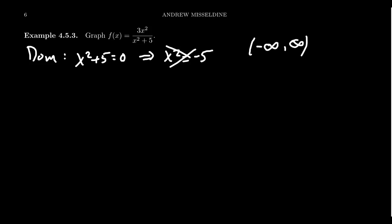Now, if we jump to discontinuities, for a rational function, the only way you'll have a discontinuity is if your denominator goes to 0. So since this denominator never goes to 0, this function has no discontinuities. That is to say, it's always continuous.